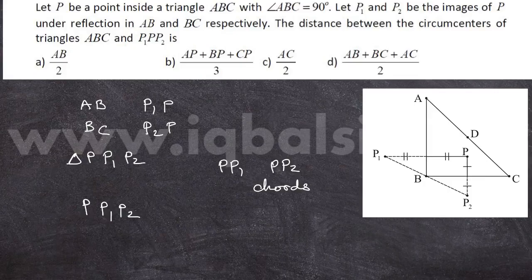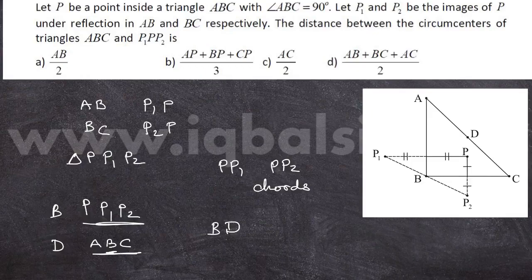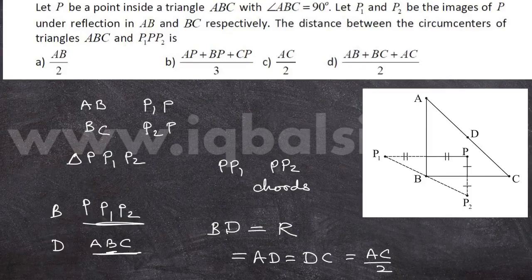Now consider triangle ABC. Triangle ABC is a right triangle right-angled at B. So the hypotenuse is AC, and the circumcenter of a right triangle is the midpoint of the hypotenuse. I have marked D as the midpoint of AC, which is the circumcenter. Now we need to find the distance between the circumcenters of triangle PP1P2, which is B, and triangle ABC, which is D. BD equals the circumradius of triangle ABC, which equals AD, which equals DC, which is AC divided by 2.